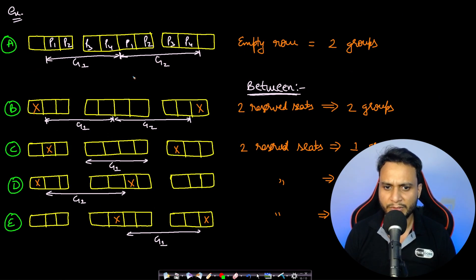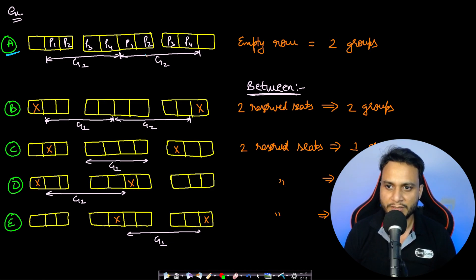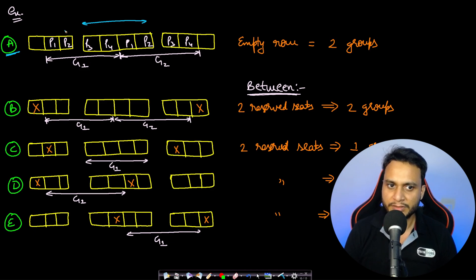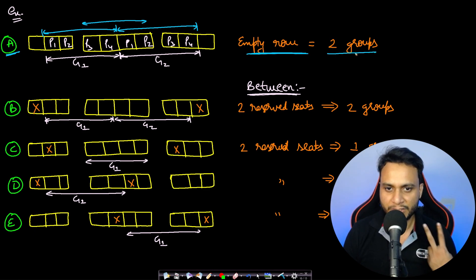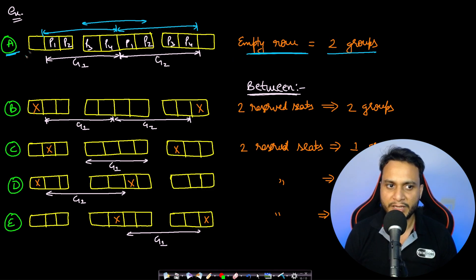Let's see all the cases involved in this problem. Case A: when the entire row is empty, you could assign one group in the middle, but that consumes the entire row. It's better to assign across the aisle and get two groupings. So if you have an empty row, you will always be able to assign exactly two groups — no less, no more.